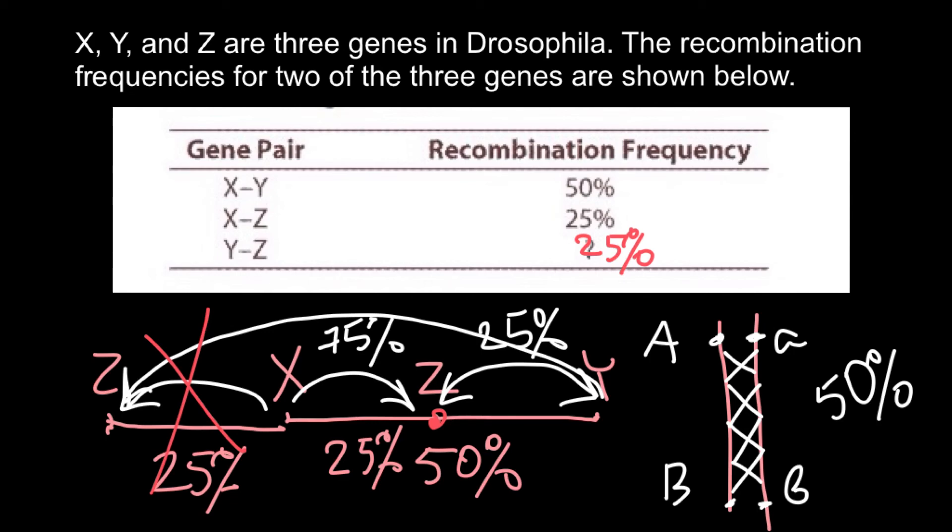we can expect 25% of the recombination. So percentage here equals to map units, which we also call centimorgans. So 50% recombination frequency would equal to 50 centimorgans distance between two genes, and this is going to be maximum.